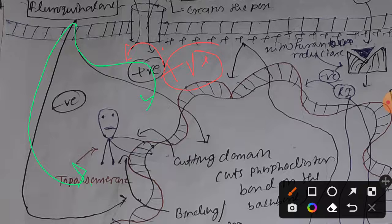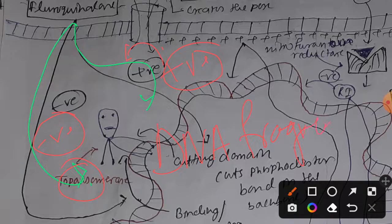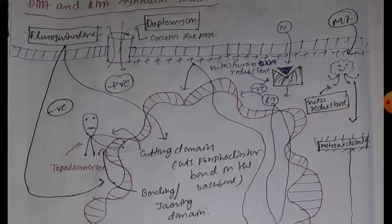On the other hand, fluoroquinolone also negatively affects the joining domain. As a result, imagine that the cutting domain is upregulated — it continues cutting phosphodiester bonds — but there is no one to rejoin them. This facilitates DNA fragmentation. If your DNA gets fragmented, you cannot survive. Similarly, if the bacterial DNA gets fragmented, the bacteria cannot survive.